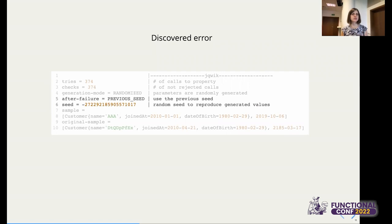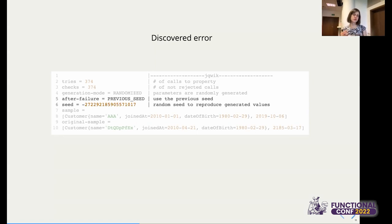What happens if we fix the bug? After all, it's random data — when we run the test again, will it be green because we fixed the bug, or because we got another random set of data? What jqwik does, which is really nice, is that after a failure, when you run the test again, it reuses the previous seed. So it generates the same set of data, ensuring that when your test is green, you actually fixed the problem.